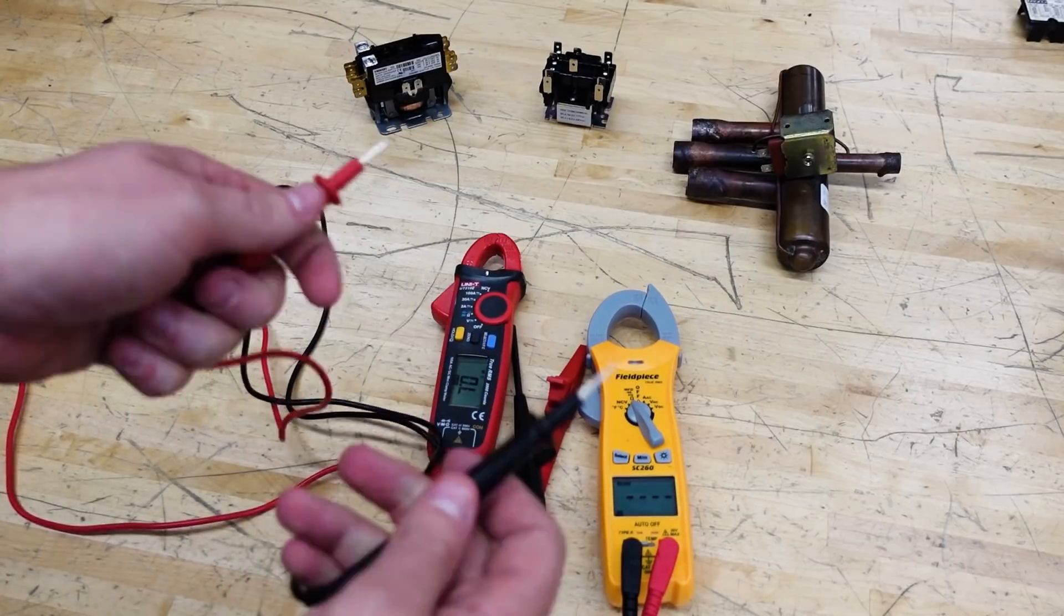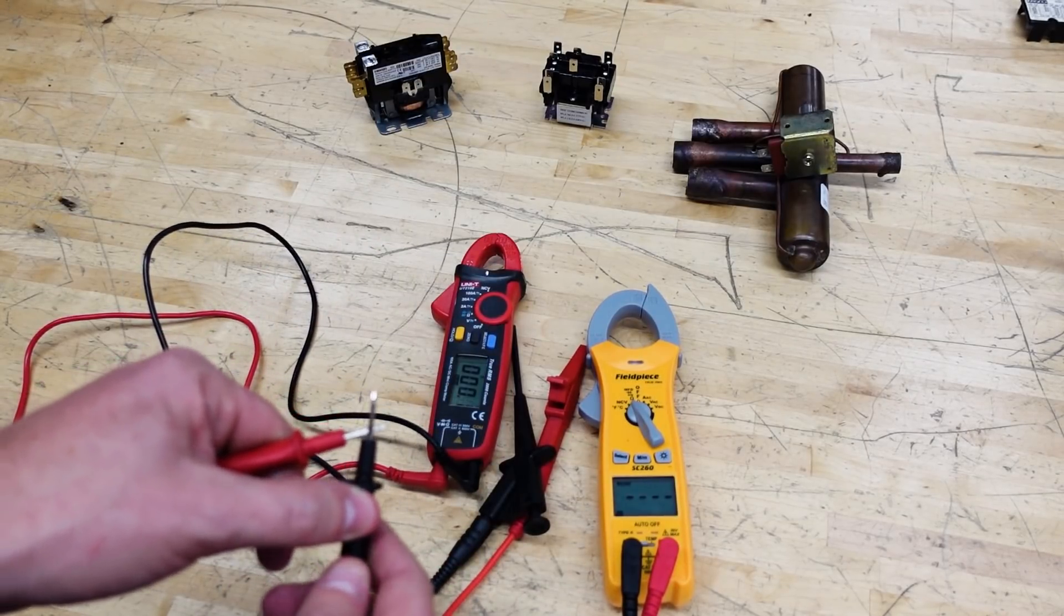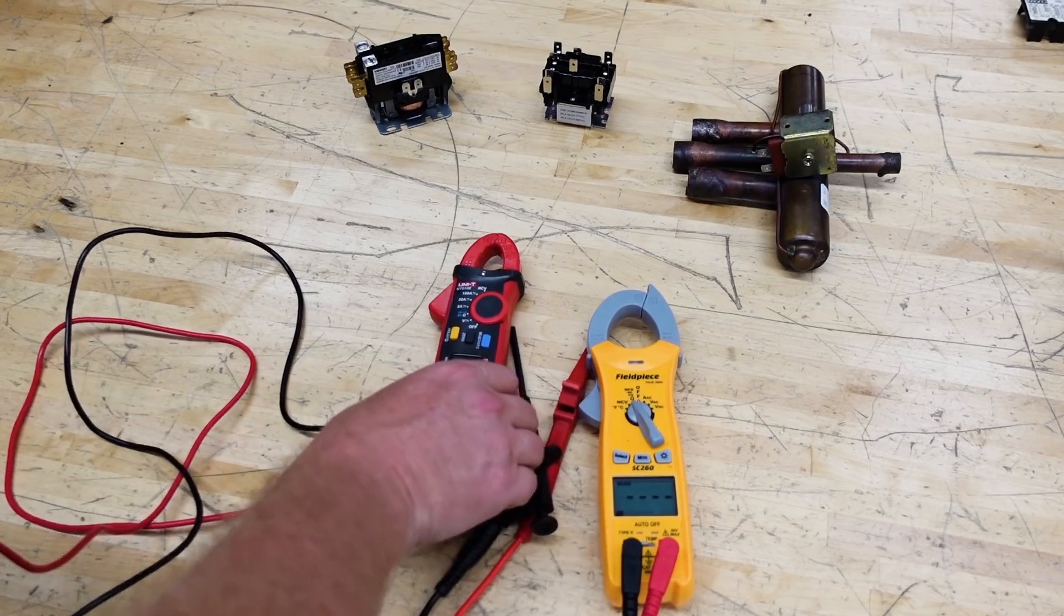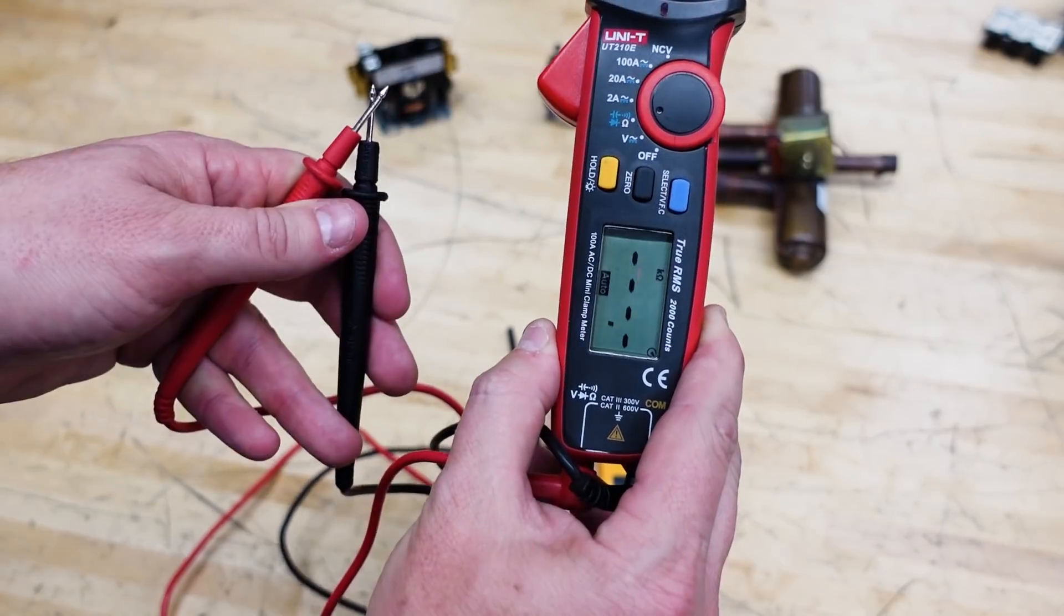We'll just do it on this one here just to show it. So we have an open path, then we connect it together. This one's not set up for the continuity ringer, but you see it's measuring a very low ohm measurement now. So infinite ohms, very low ohms.